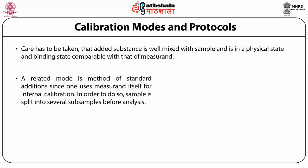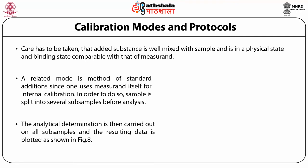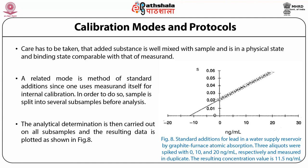The assumption in the internal standard mode is that the measurement shows the same behavior in all critical steps. Thus the ratio between the data of the measurement and the surrogate substance constitutes more reliable information than the data of the measurement itself. A very reliable mode is the method of standard addition, since one uses the measurement itself for internal calibration. The sample is split into several subsamples — one subsample is treated as usual while increasing amounts of the analyte are added to the other subsamples. The analytical determination is then carried out on all subsamples and the resulting data is plotted as shown in figure 8, illustrating standard additions for lead in a water supply reservoir by graphite furnace atomic absorption. Three aliquots were spiked with 0, 10, and 20 nanogram per ml respectively and measured in duplicate, giving a concentration value of 11.5 nanogram per ml.